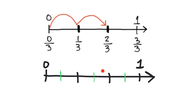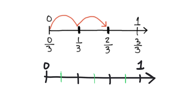Even though I haven't really changed anything other than adding in these extra lines, this two thirds is no longer labeled as two thirds. If I wanted to know what fraction is represented by that dot, I would count: one, two, three, four, five, six pieces. So the denominator is six, and counting the highlighted pieces: one, two, three, four. So this dot right here represents four sixths.